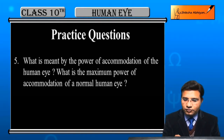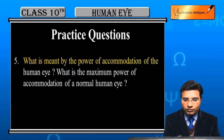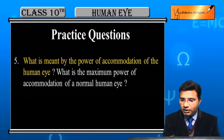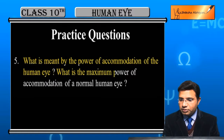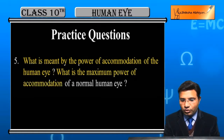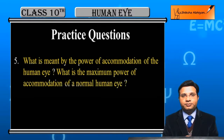Question 5: What is meant by the power of accommodation of the human eye? And what is the maximum power of accommodation of a normal human eye?